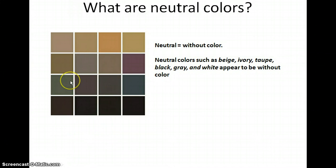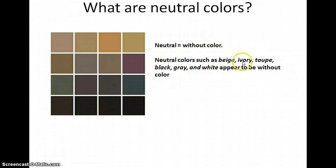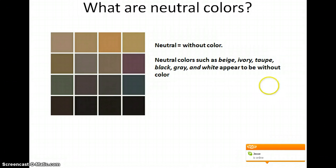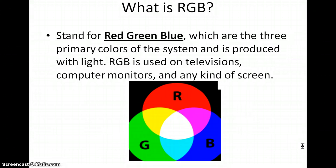Finally, we have the neutral colors. Neutral colors are balanced — there's no lean toward warm or cool. As it says here, natural colors such as ivory, black, gray, and white appear as if there's no color at all. We can define neutral colors as being without color.